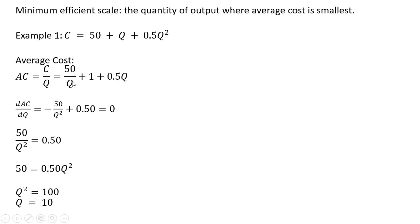So the derivative of 50 divided by Q, using the quotient rule, gives us minus 50 divided by Q squared. The derivative of 1 is 0. And the derivative of 0.5Q is just 0.5.